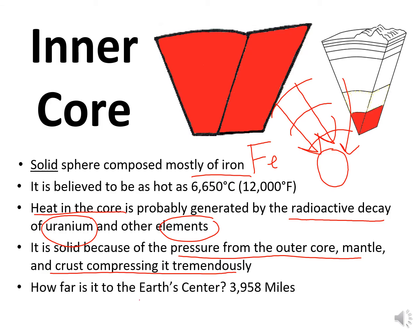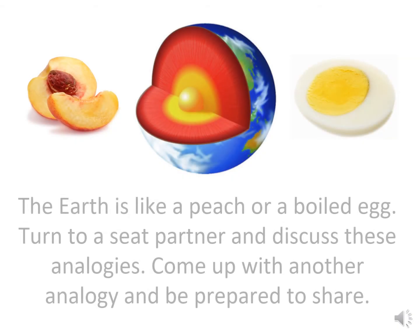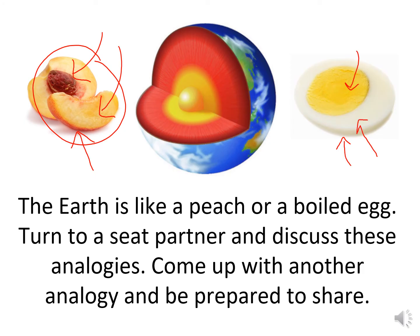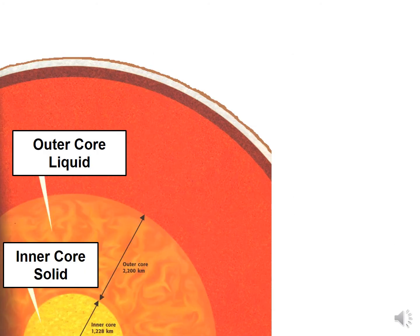How far is it to the earth's center? Almost 4,000 miles. Like a peach, you can see the thin crust, the mantle with its three layers, and the solid core. Same thing with an egg — you have the shell (crust), the white (mantle), and the yolk (core). Outer core: liquid. Inner core: solid.